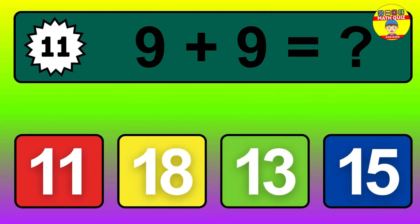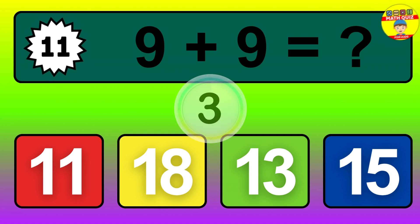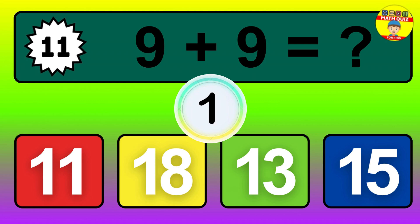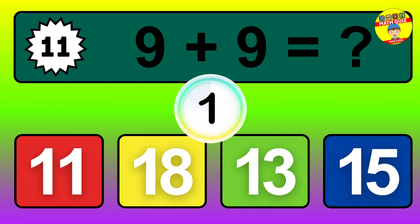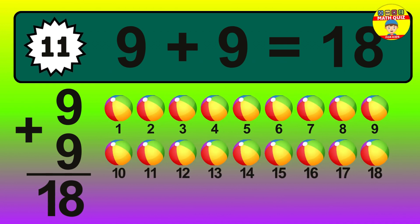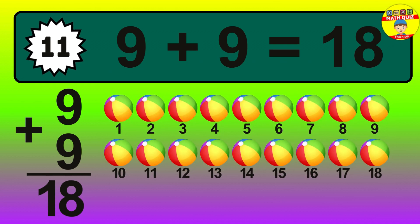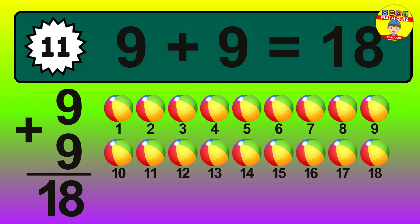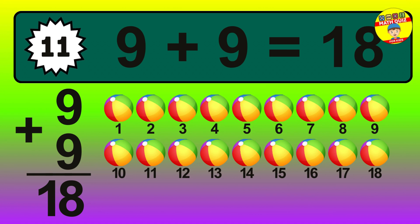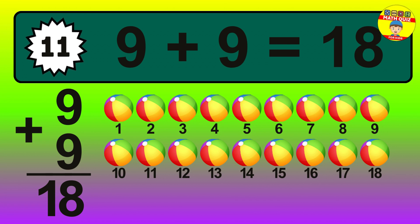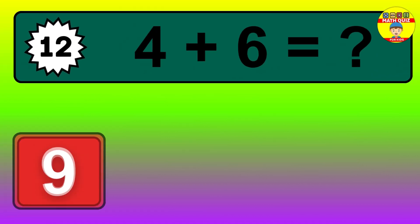Question 11. 9 plus 9 equals what? So the answer is 9 plus 9 is 18. Let's count it. 1, 2, 3, 4, 5, 6, 7, 8, 9, 10, 11, 12, 13, 14, 15, 16, 17, 18.